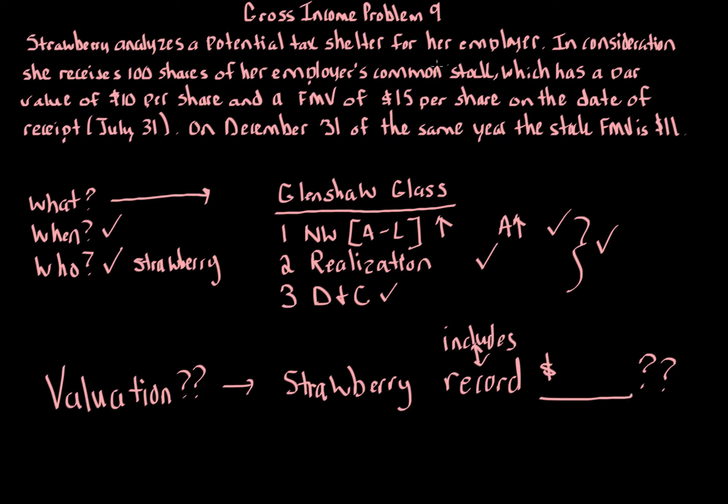We have a few different options. We have the par value on receipt, which is $10. Our second option is the $15 fair market value on the date of receipt. Par value is the actual amount printed on the stock certificate, which a lot of times will be different than the fair market value.